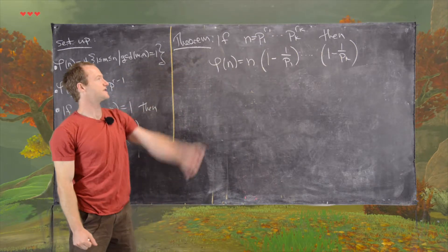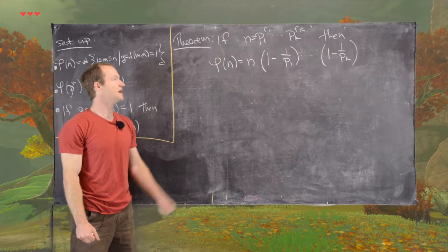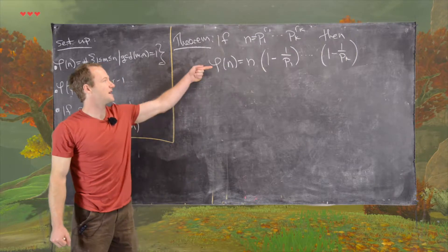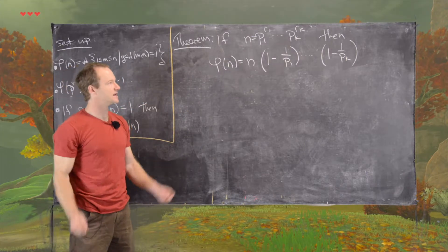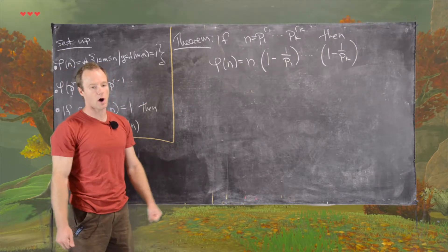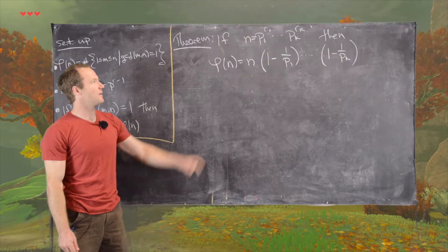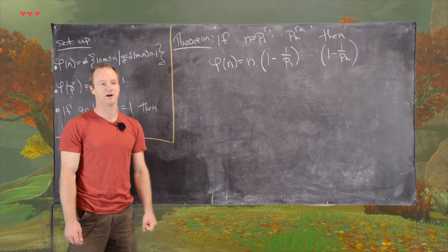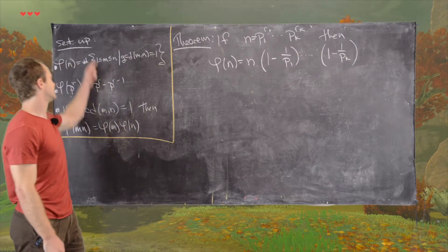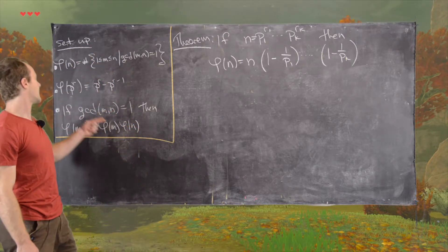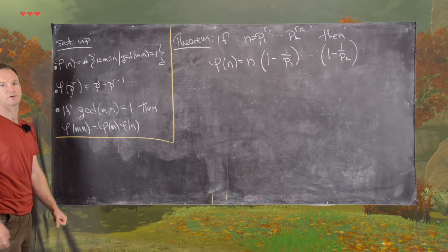Although it's useful to know the complete prime factorization of n, in fact in this formula you actually only need to know all of the prime factors. The powers of each prime are kind of wrapped up in the proof. And we'll apply these second two bullet points along the proof.